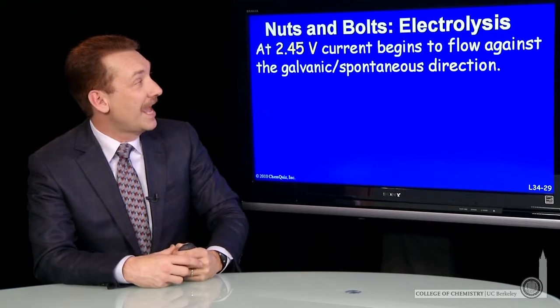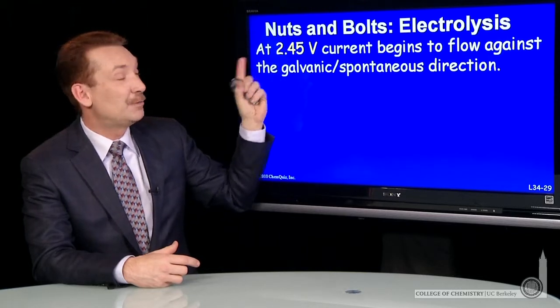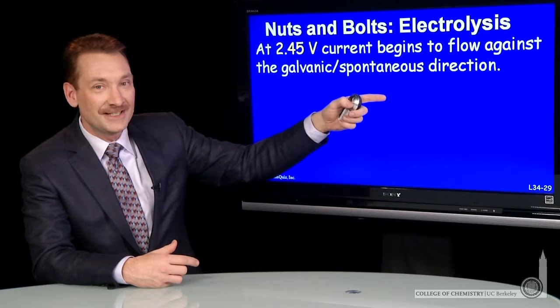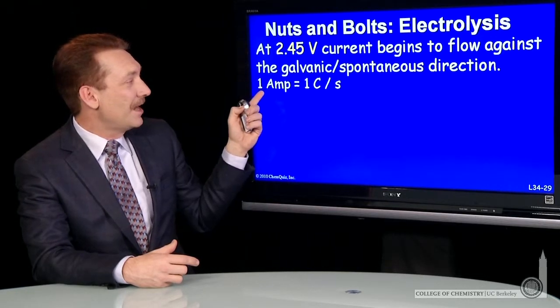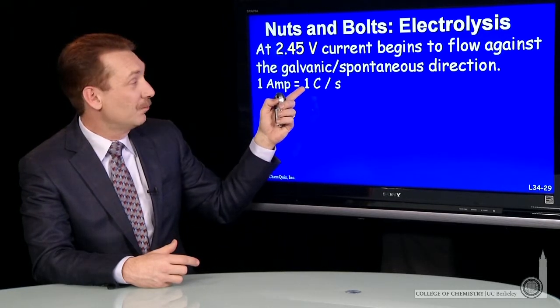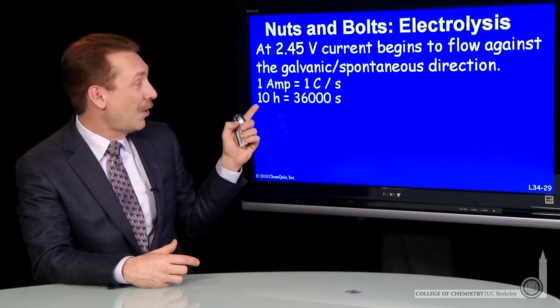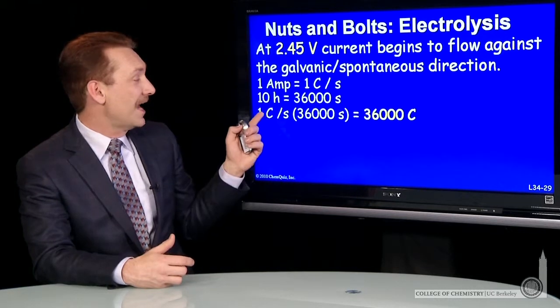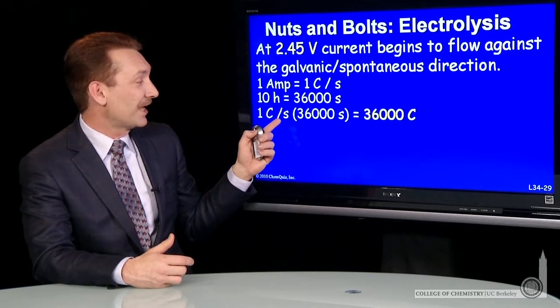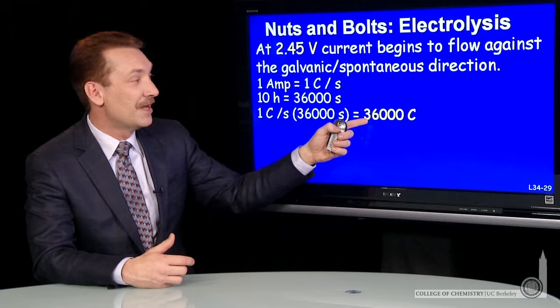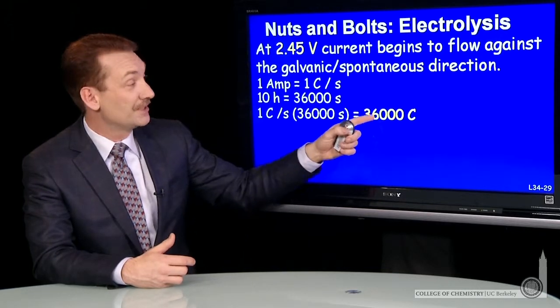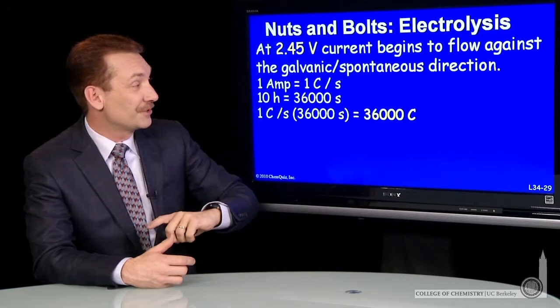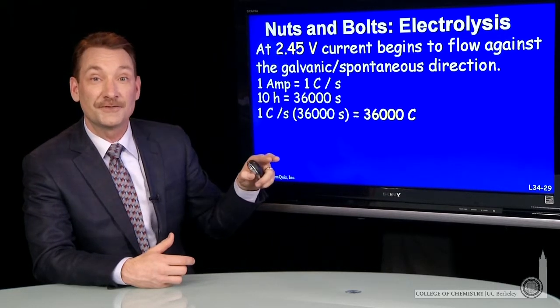Now, as current begins to flow at 2.45 volts, I'm going to let it go against the galvanic direction, and I'm going to let an ampere of current, one coulomb per second, flow for 10 hours or 3,600 seconds. So that's one coulomb per second for 3,600 seconds is 36,000 coulombs. So 36,000 coulombs of charge are going to be transferred.